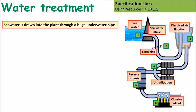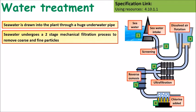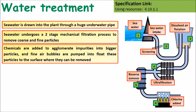The process of desalination starts off with seawater drawn into the plant from the sea. The seawater undergoes a two-stage mechanical filtration process that removes coarse and fine particles such as sand and grit. Chemicals are added to stick impurities together and fine air bubbles are pumped in to float these particles to the surface where they can be scraped off and removed.